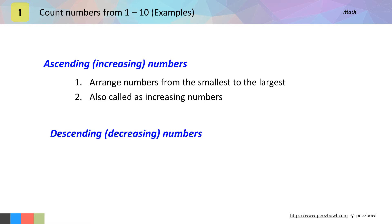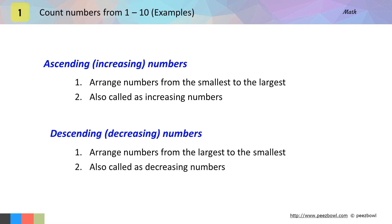Arranging numbers in descending order means you need to arrange numbers from largest to the smallest. That means you need to write the bigger number first and then smaller numbers. Descending order is also called decreasing order. We will learn this by a few examples.